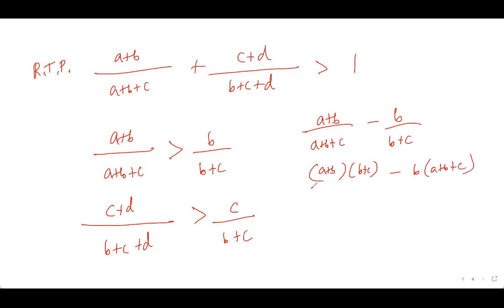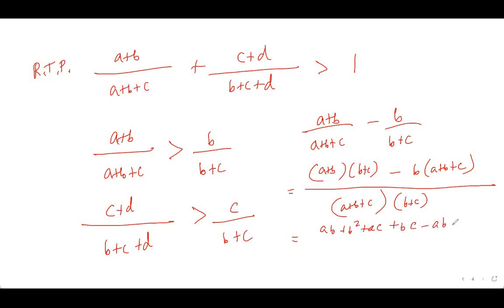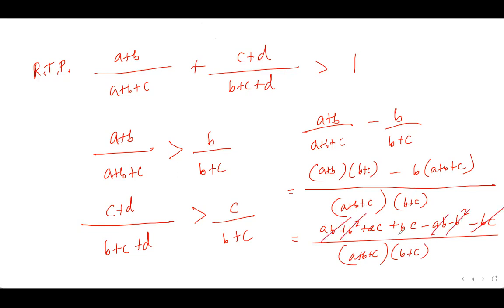Expanding: ab + b² + ac + bc − ab − b² − bc = ac, divided by (a+b+c)(b+c), which is strictly greater than zero since a, c > 0. The second inequality is analogous. This completes the proof for part A.